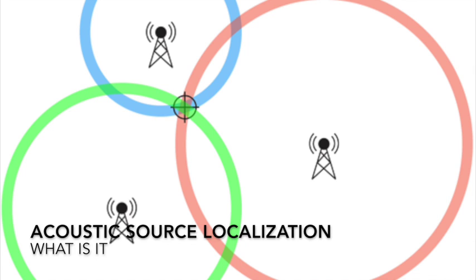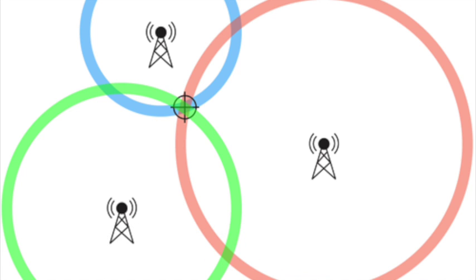Acoustic source localization is the estimation of the location of a sound source based on the differential arrival of sound from the source. This concept could be used to make any surface a touch surface. In this project, the system is attached to an LCD screen.